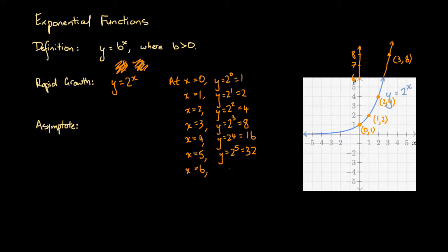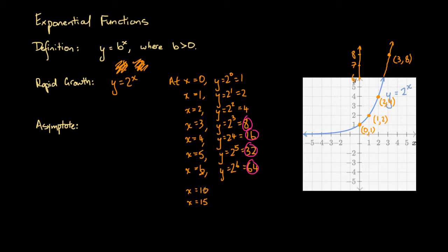At x equals 6, we're going to get y equals 2 to the power of 6: 2 times 2 is 4, times 2 is 8, times 2 is 16, times 2 is 32, times 2 is 64. So you can see that we'd need a very big screen to graph this. Even at x equals 5 or x equals 6, we're associated with very, very large values of y. And if we put in x equals 10 or x equals 15 — relatively low x values — they're associated with extraordinarily high y values.